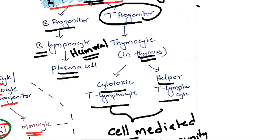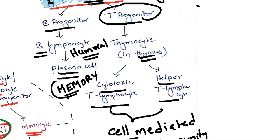Plasma cells are also called memory cells. They help in a faster response to antigens which are invading our body again.